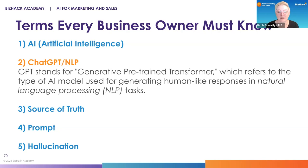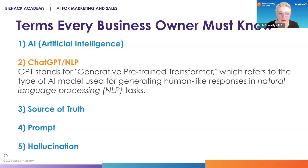Someone has done that with tax code — inputting all of the latest tax code — and they have a phone number you can call to ask it questions, all AI generated. So while ChatGPT has a base of 2021, it gets new information as people use it. You can input your own information and then have it generate things like blog posts or copy for your website.